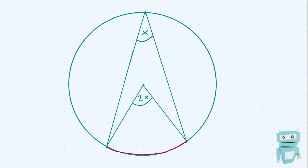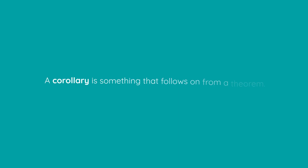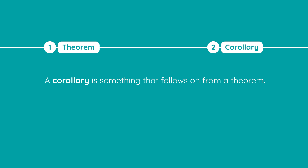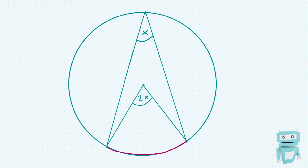That's all we mean by this theorem, but there are actually going to be a few corollaries as well. A corollary is just something that follows on from the theorem — so if we know a theorem is true, a corollary is something that's also true because the theorem is true. You can think of corollaries almost like consequences of a theorem.